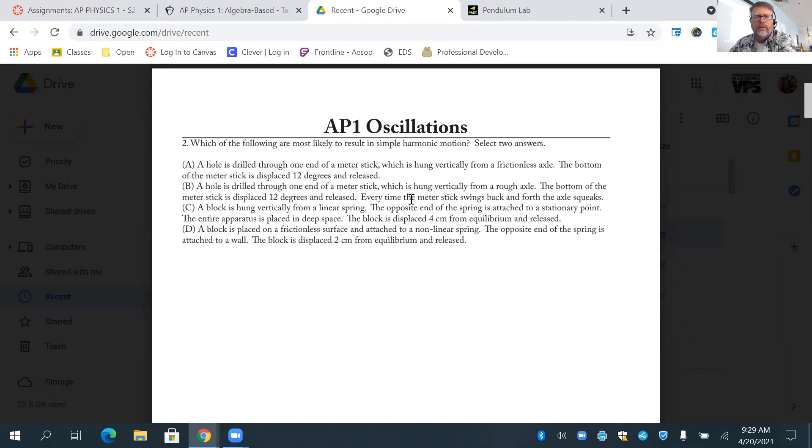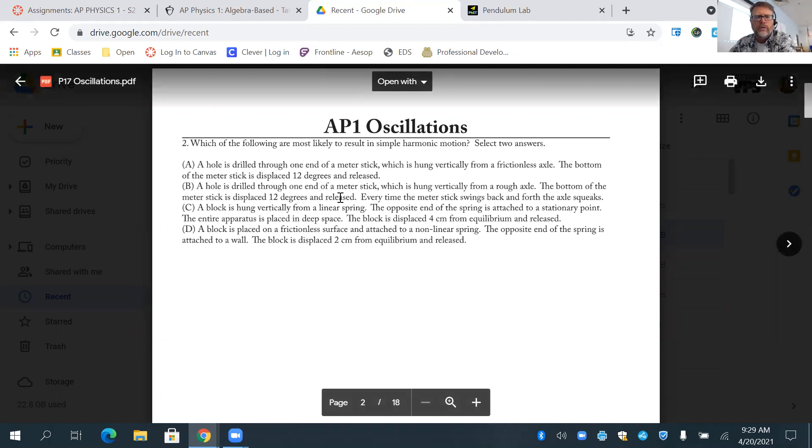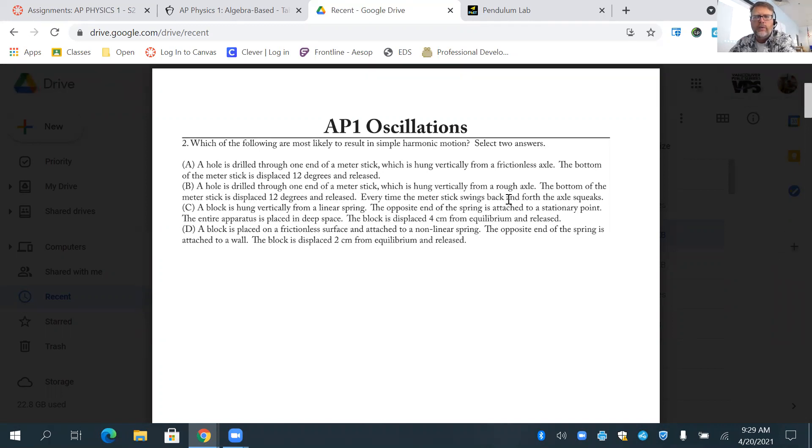Drilled through one end, run vertically, the bottom of the stick is displaced 12 degrees and released. Every time it swings back and forth, the axle squeaks. That is a good sign of friction and dampening, and it's no longer simple harmonic motion. All right, so not B.